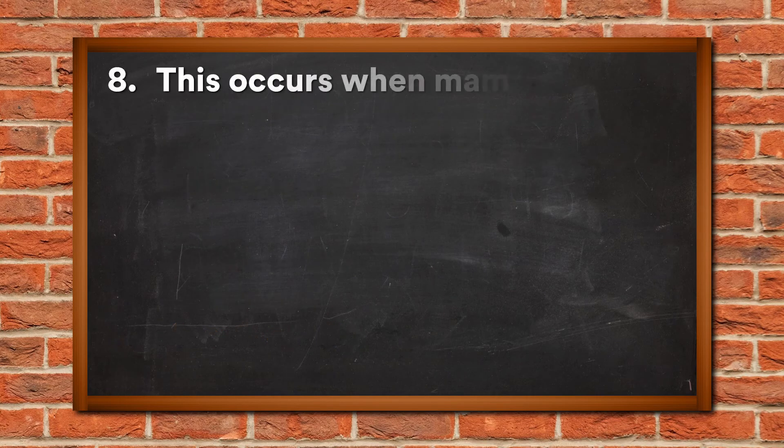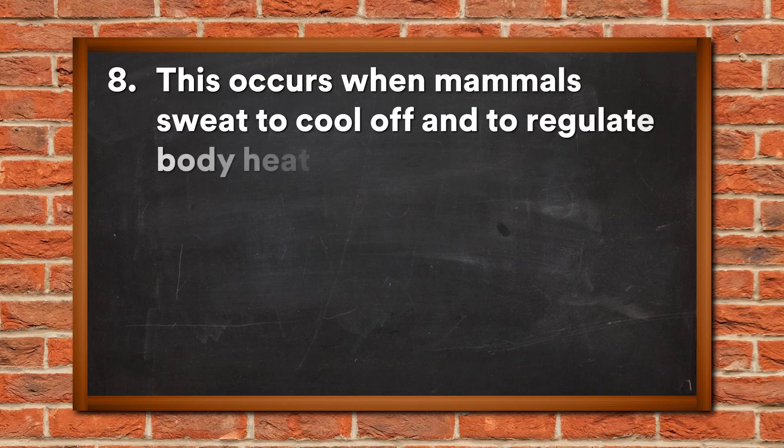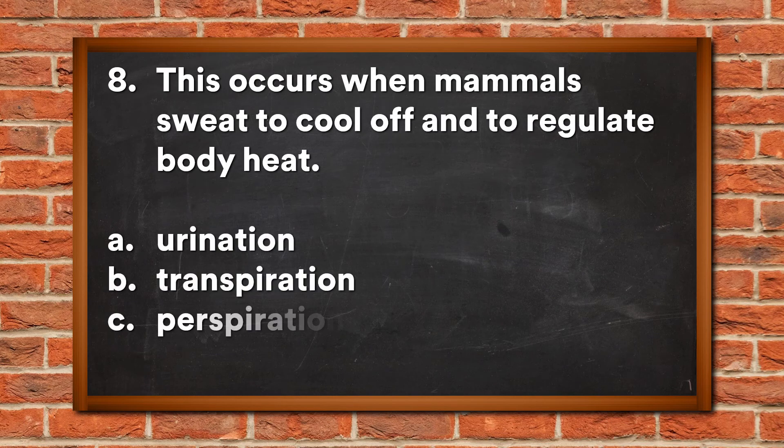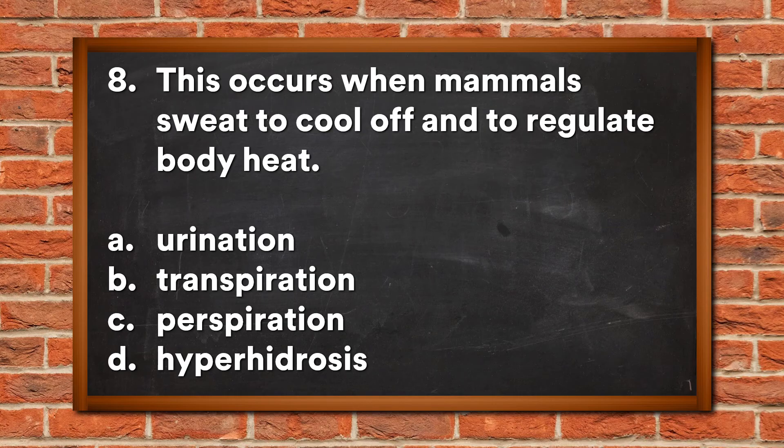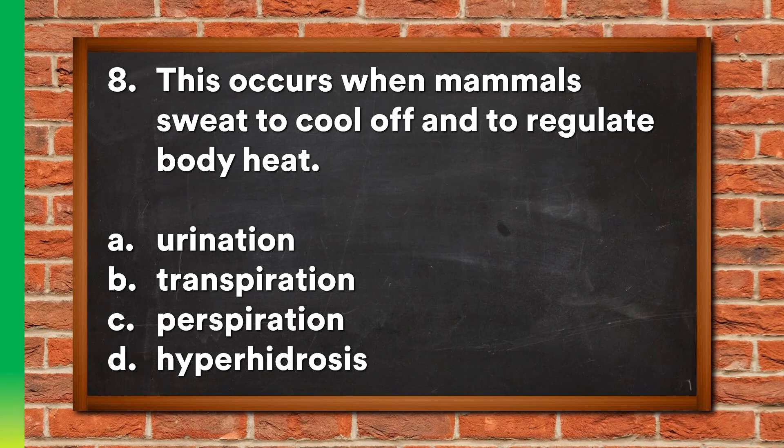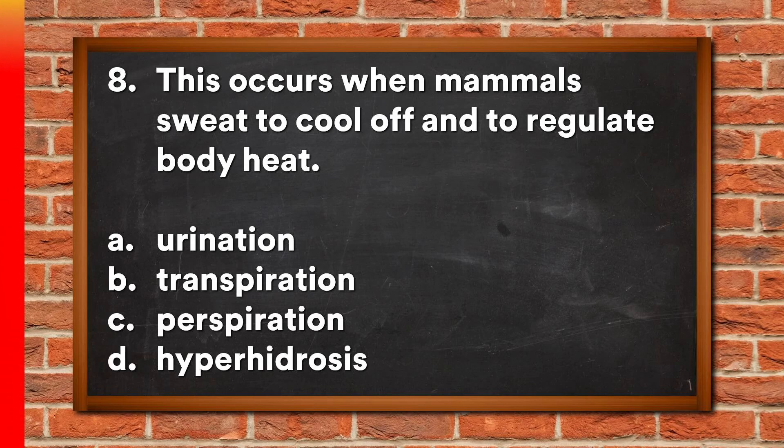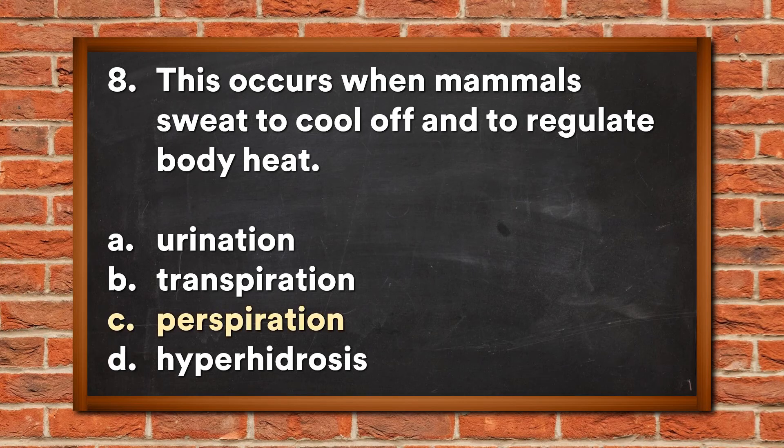Question 8: This occurs when mammals sweat to cool off and to regulate body heat. A. Urination, B. Transpiration, C. Perspiration, D. Hyperhidrosis. The answer is C, Perspiration.